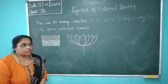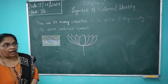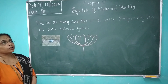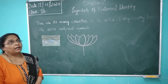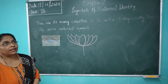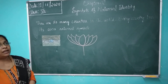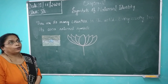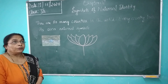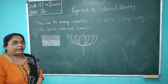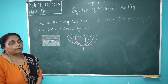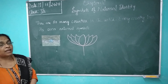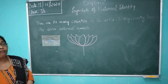Next is the national animal, that is the tiger. The tiger is our national animal. If you go to any zoo, you can see the yellow tiger which has black stripes on its body. It is a symbol of power.